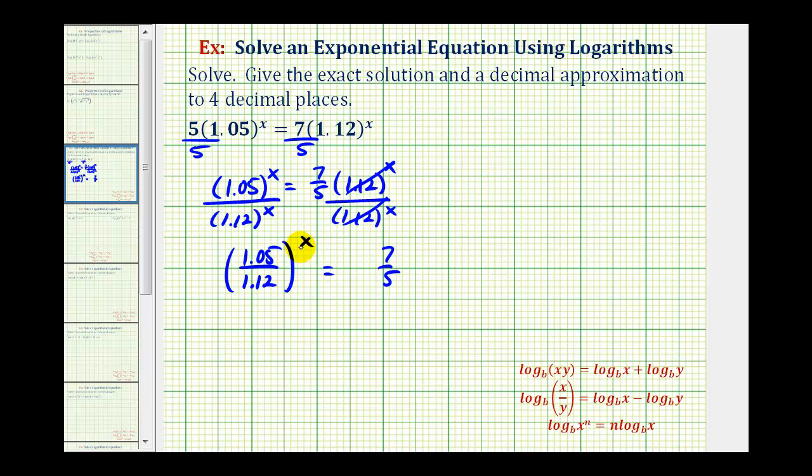And now we want to take advantage of the power property of logarithms so we can move this x out of the exponent position. So now we'll take the common log or natural log of both sides of the equation. Let's go ahead and use the common log this time. So we'd have the common log of 1.05 divided by 1.12 raised to the power of x equals the common log of seven-fifths.